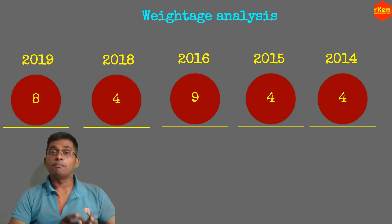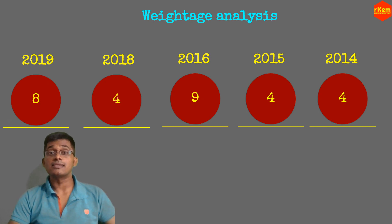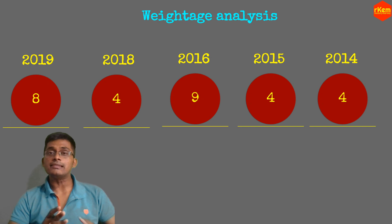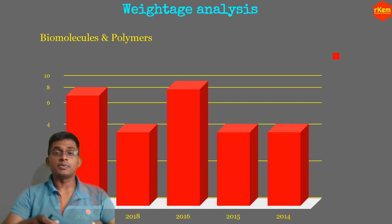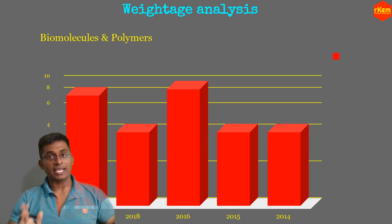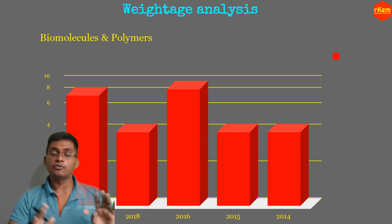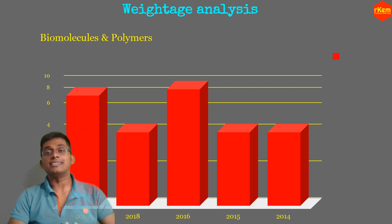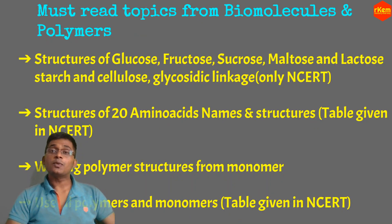Let us begin with the weightage analysis from past five years. You can see 2019: 18 marks, 2018: 16 marks, 2016: 9 marks — remaining years a minimum of 4 marks from these chapters. In 2019 the maximum was 16 marks, remaining years minimum 4 marks. That means at least 4 marks are in your pocket if you watch this video.